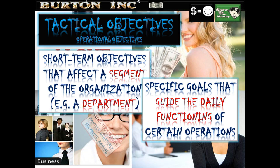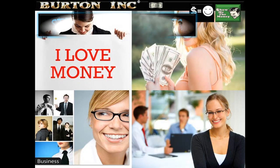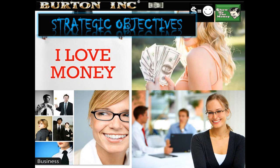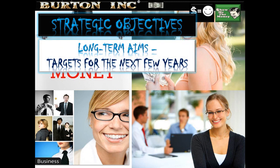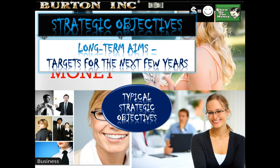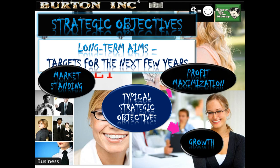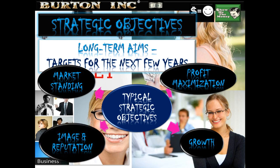Short-term targets can be monthly, quarterly, or annual, but no longer. Once they become longer-term, we start talking about strategic objectives — targets for the next few years or into the foreseeable future. Typical strategic objectives may include profit maximization, growing the business, enhancing its image and reputation, and improving its market standing.